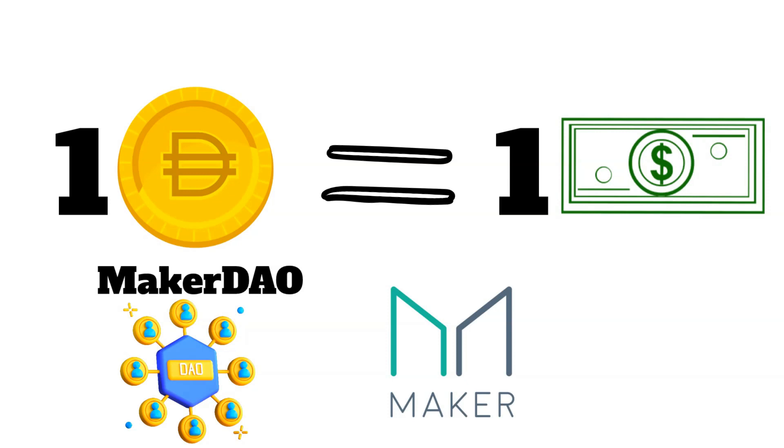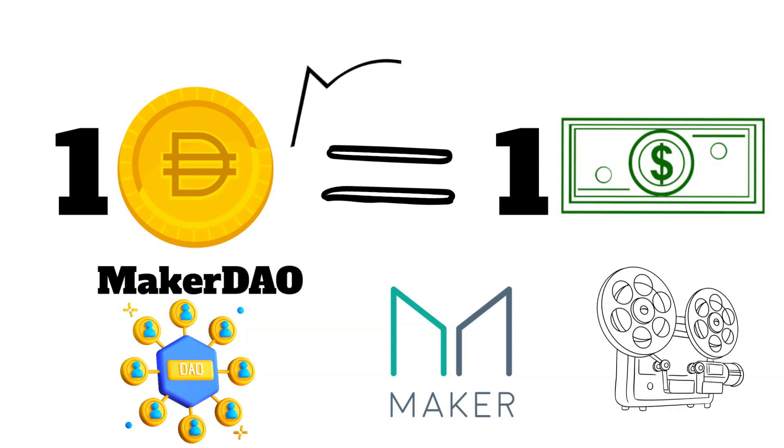DAI stablecoins are produced through the Maker Protocol platform, which we will explain in this video, but can also be bought directly using fiat currency on most centralized crypto exchanges.